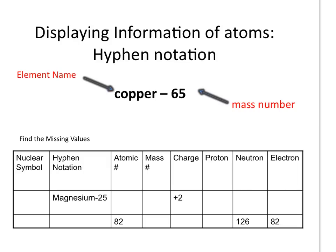Another way to display information about an atom is to use hyphen notation. We take the element name, put a hyphen behind it, and then the mass number of that particular atom goes on the end. You will learn in the next section that atoms can have isotopes — atoms of the same element that have the same number of protons but a different number of neutrons, which means the mass number can change. So be aware that sometimes the mass number on the periodic table is not going to be the correct mass number for the particular atom we're looking at. Whenever you are given a chart, if the number of protons and neutrons are given to you, add those up to get the mass number instead of going directly to the periodic table.